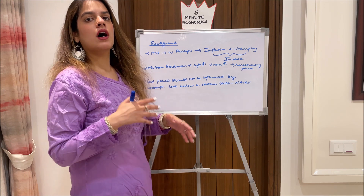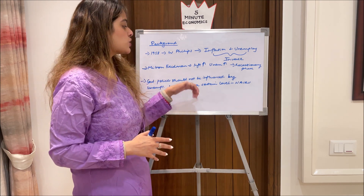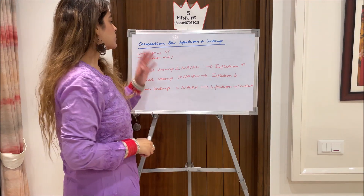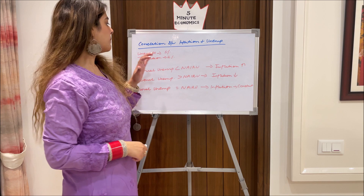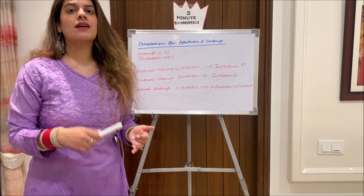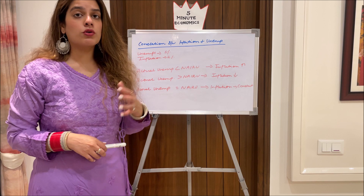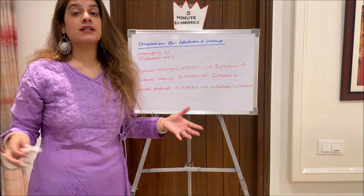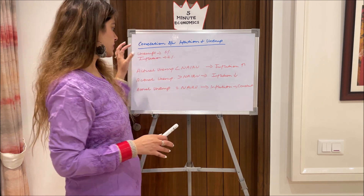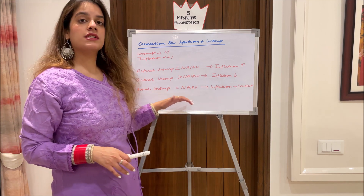This is when Milton Friedman, along with other economists, introduced the concept of NAIRU. They stated that government policies should not be influenced by unemployment levels below a certain threshold — and that level is known as NAIRU. For example, if unemployment is at 5% and inflation is at 2%, economists note that the inflation rate will respond to changes in the unemployment rate over time.